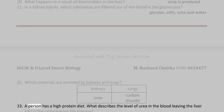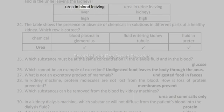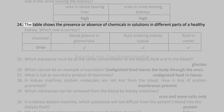23. A person has a high protein diet. What describes the level of urea in the blood leaving the liver and in the urine leaving the kidneys? Urea in blood leaving liver: high. Urea in urine leaving kidneys: high.